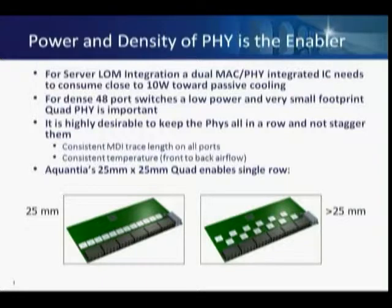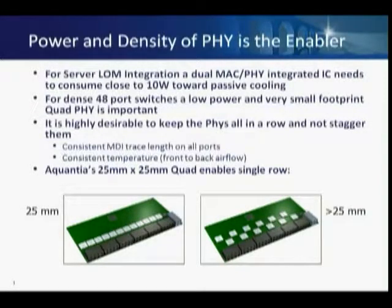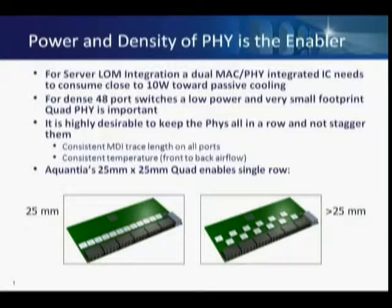Soon, in the next few months, you will see the Romey generation of servers enabled with such ICs. For high-speed density switches, it is desirable to fit eight ports of PHY behind a stacked RJ45, which consists of an RJ45 jack with integrated magnetics. In such a configuration you get the most board-efficient implementation: the smallest Y dimension, the shortest MDI traces for best signal fidelity, and a very clean front-to-back airflow and consistent temperature profile. Aquantia's 25x25 quad is the only product enabling single-row implementation for multi-port switches today.